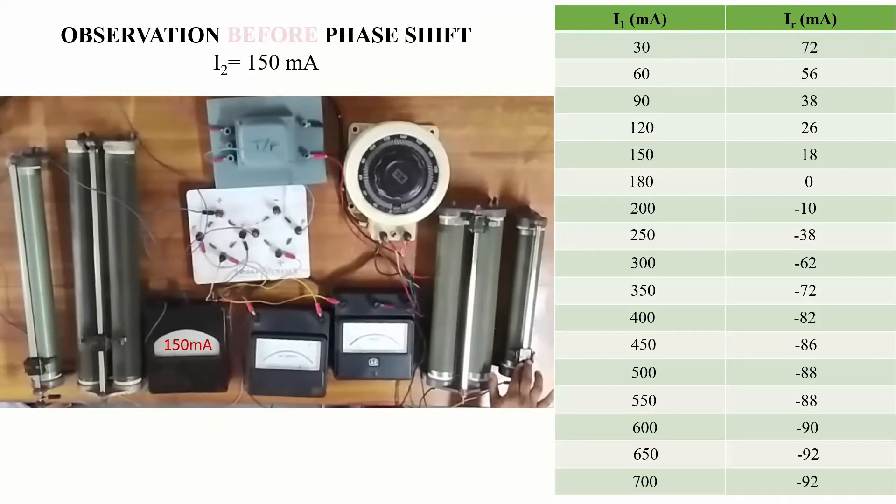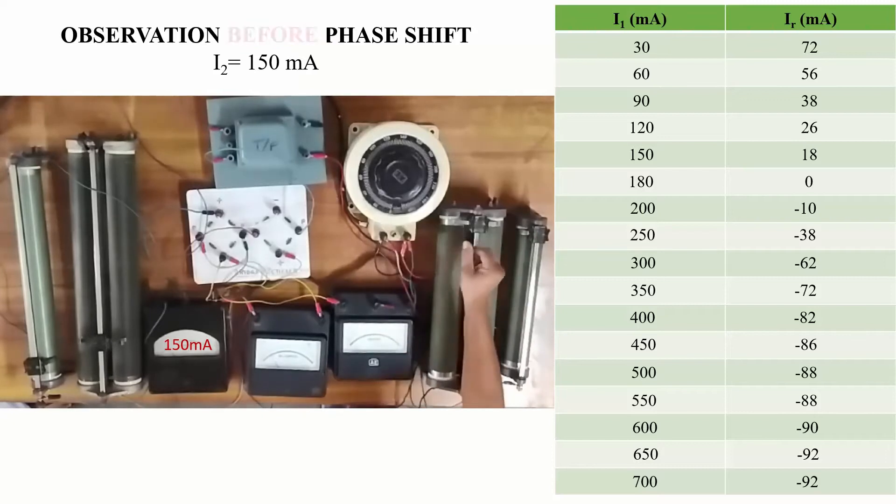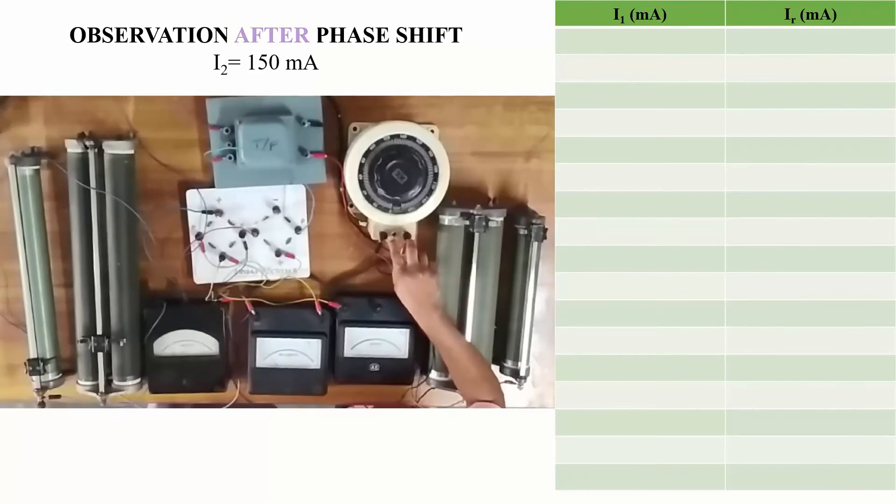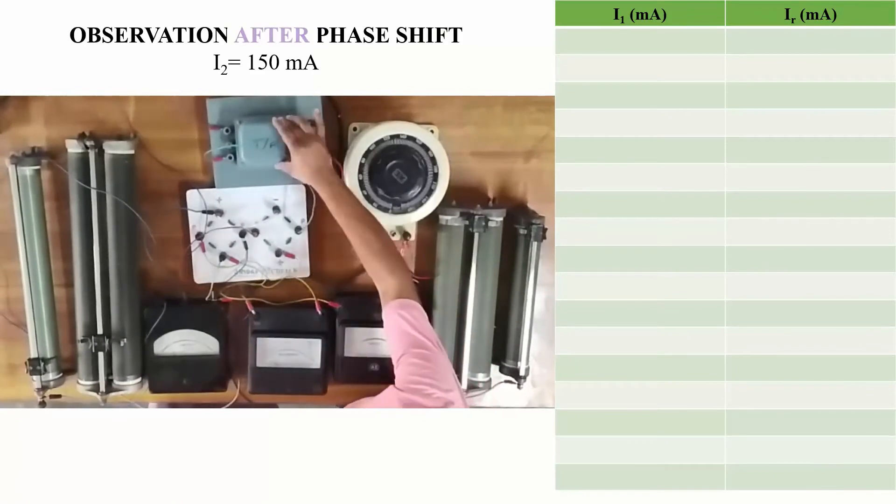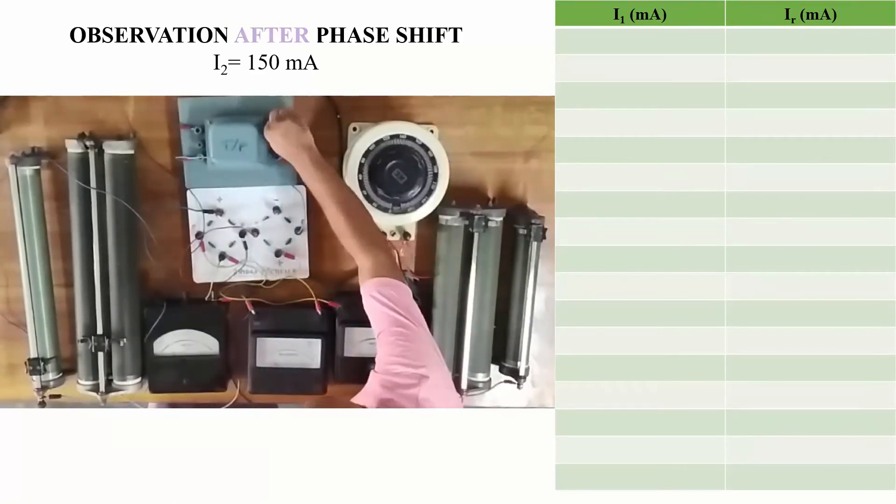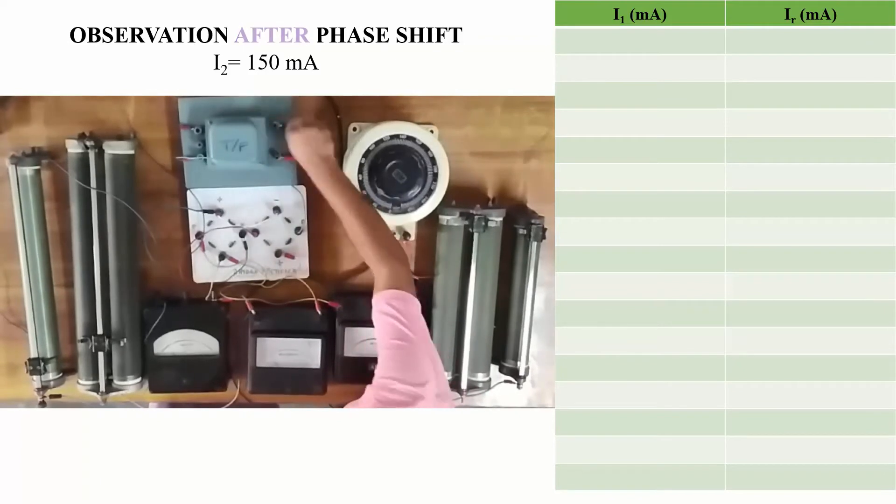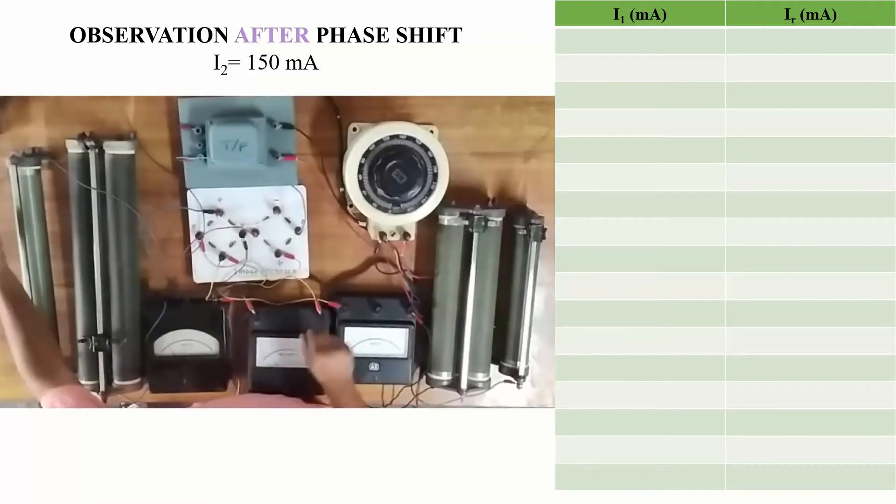Now we will perform a shift in the phase in the second part of the experiment. This will be the observations taken after shifting the phases. Here is how we shift the phase: we change the terminals of the inputs to the winding transformer.